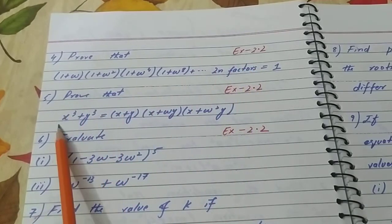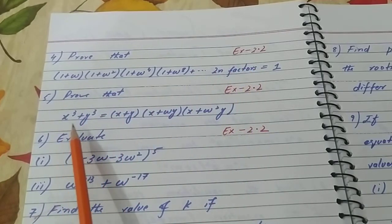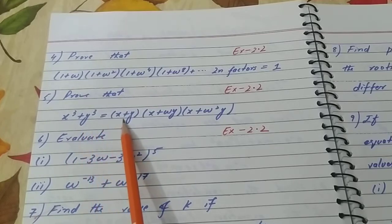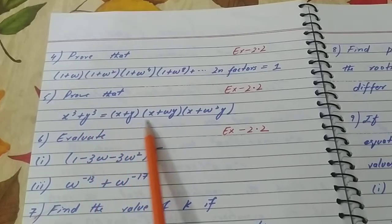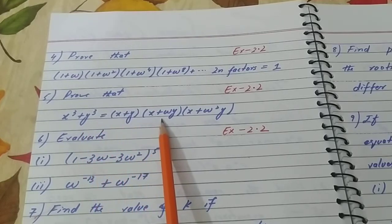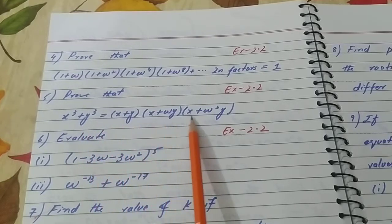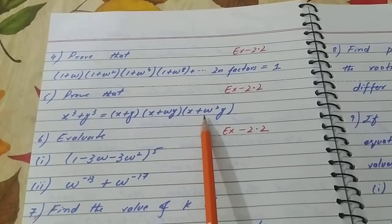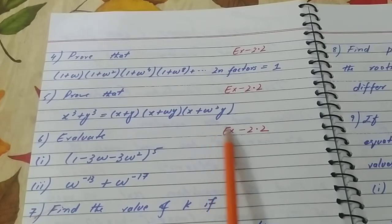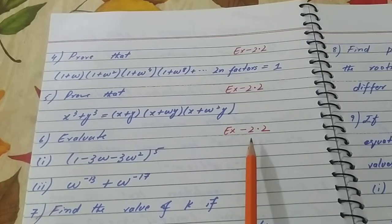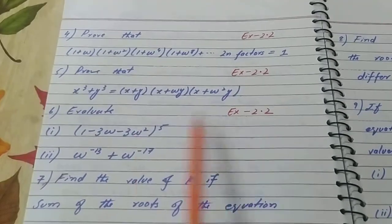Question number 5: Prove that x³ + y³ = (x + y)(x + ωy)(x + ω²y). This is also Exercise 2.2.